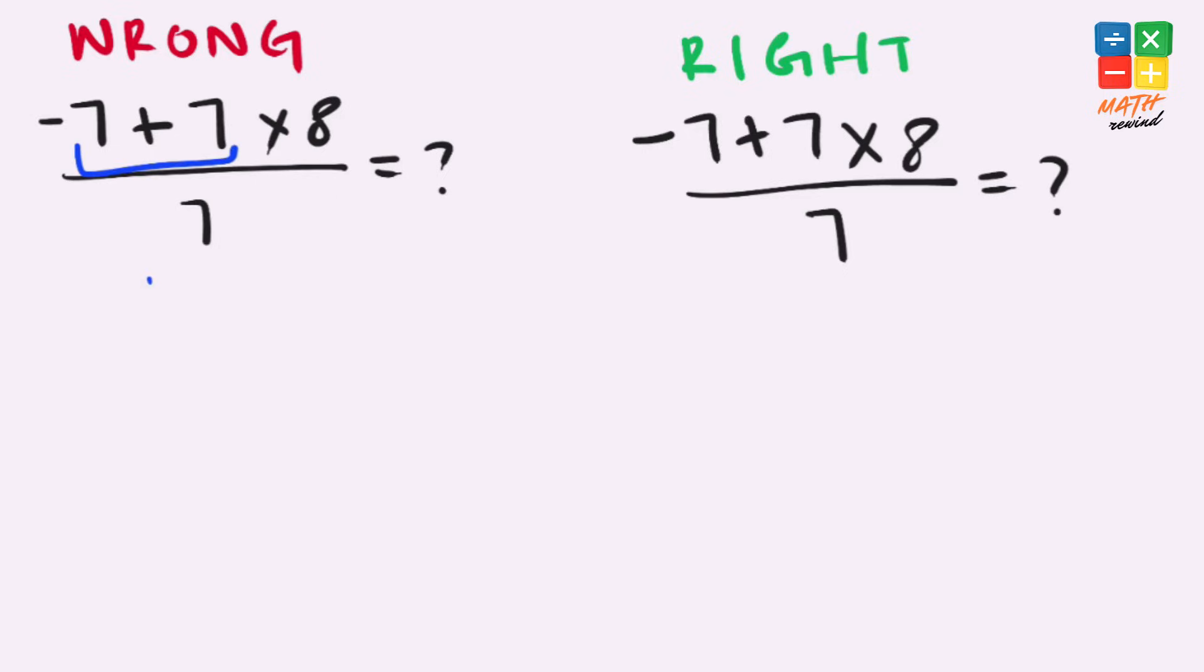Minus 7 plus 7 equals 0. Our expression becomes 0 times 8 over 7. 0 times 8 gives us 0. 0 over 7 equals 0.